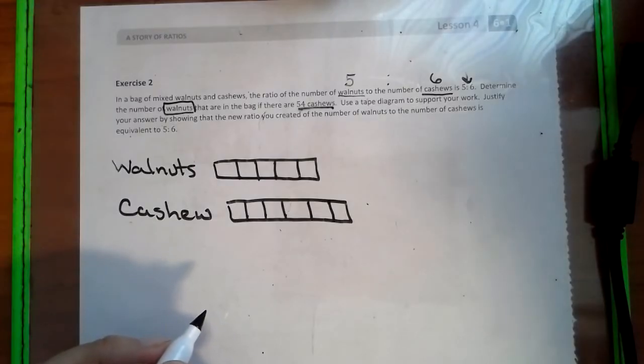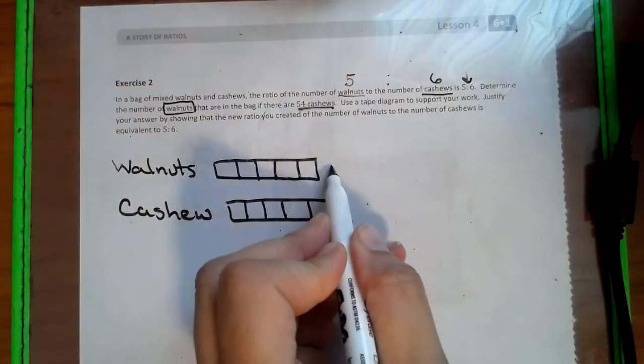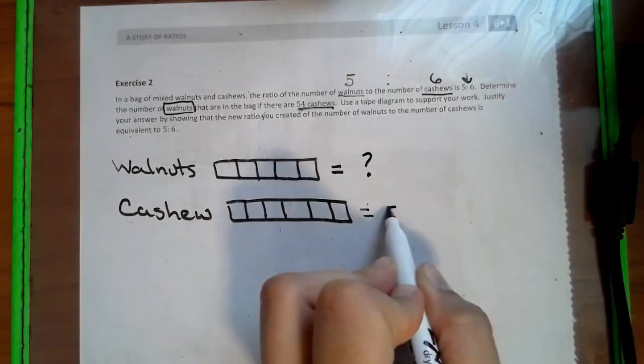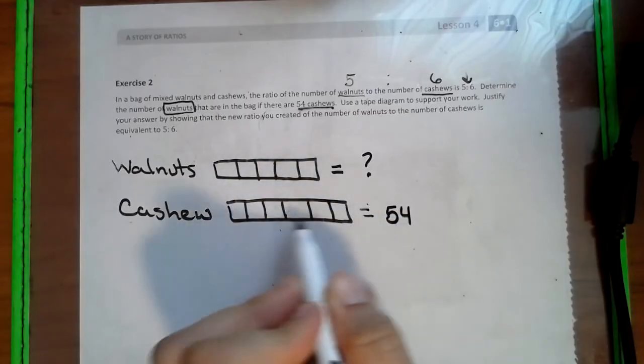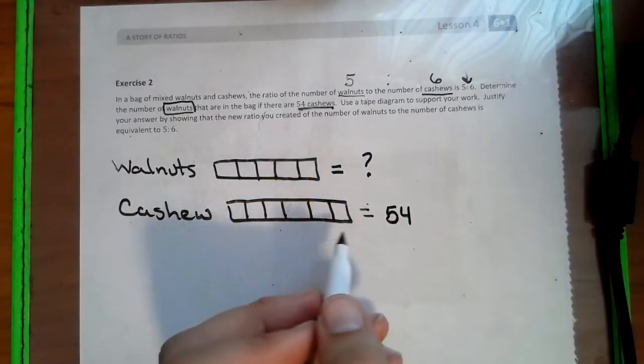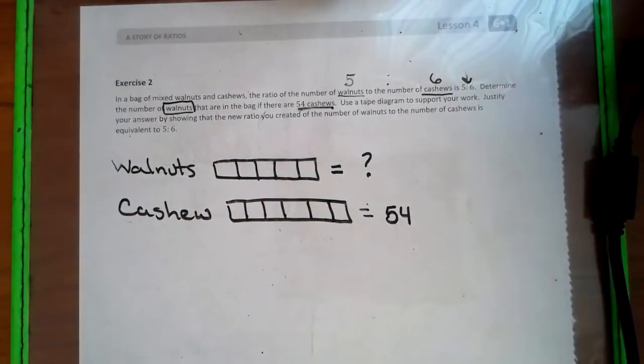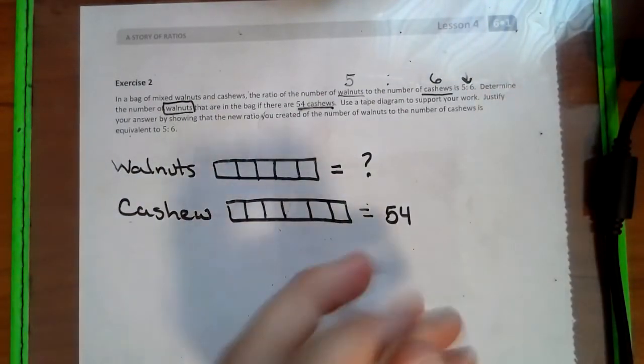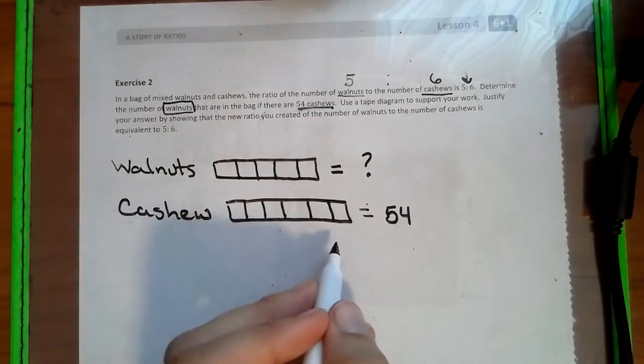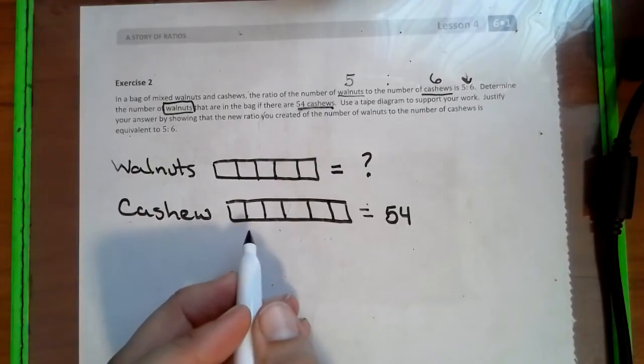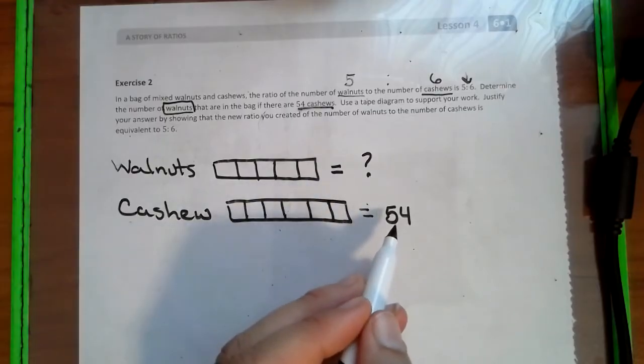Now, it says determine the number of walnuts. So we don't know the walnuts if there are 54 cashews. So this row equals 54. So we have 6 boxes that has to be 54. Okay, so if we have 6 boxes to make 54, we have to figure out what goes in each box in order to make it add up to 54.